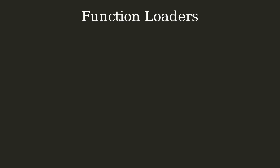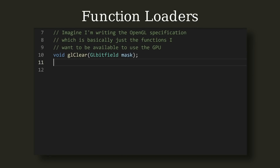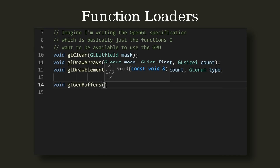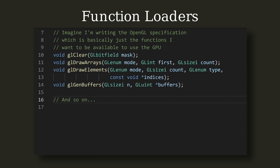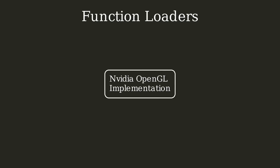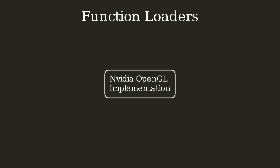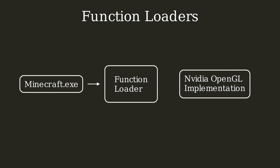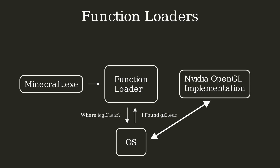In addition to a window library, you'll need a function loader for OpenGL. What is a function loader, and why is it necessary? Since OpenGL is only a specification, it's up to the driver manufacturers to create the actual implementation of OpenGL functions. For example, imagine you're Nvidia and you just released a new graphics card. OpenGL has a list of functions that must be available for that card to be compatible. Nvidia engineers code the implementation, and when you install the drivers, those functions become available. But this introduces a problem: how does our code know where to find them? Basically, we need to ask our OS to locate the OpenGL functions and return function pointers we can use to call them.